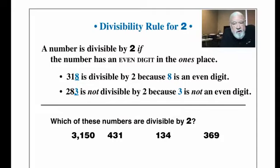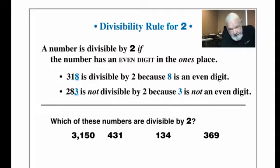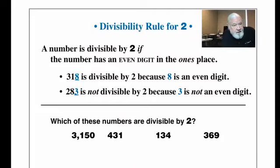Looking at the numbers on screen — 3150 is divisible by two because zero is indeed an even digit in the ones place. 431 has an odd digit in the ones place, so that doesn't qualify. 134 has an even digit in the ones place, so it is divisible by two. And 369 has an odd digit in the ones place, so it is not.